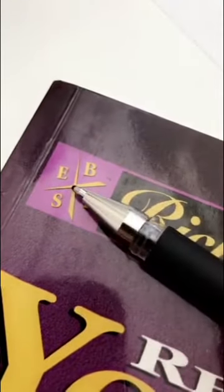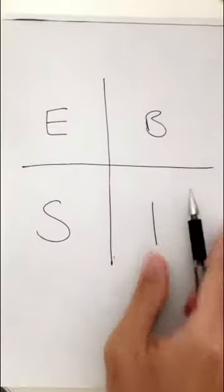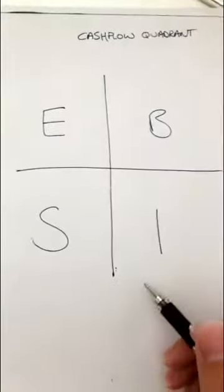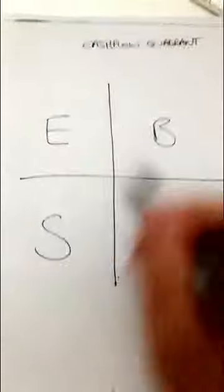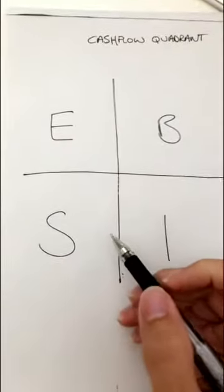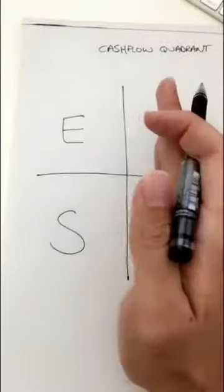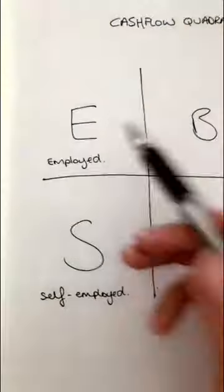If you haven't read any of Rob Kiyosaki's stuff, let me just really quickly explain this. It's pretty elementary, but for people who are new to it, it could be interesting. This is called the Cashflow Quadrant — quad meaning four, cashflow meaning cashflow. On the left is what poor people do, and the right is what rich people do.